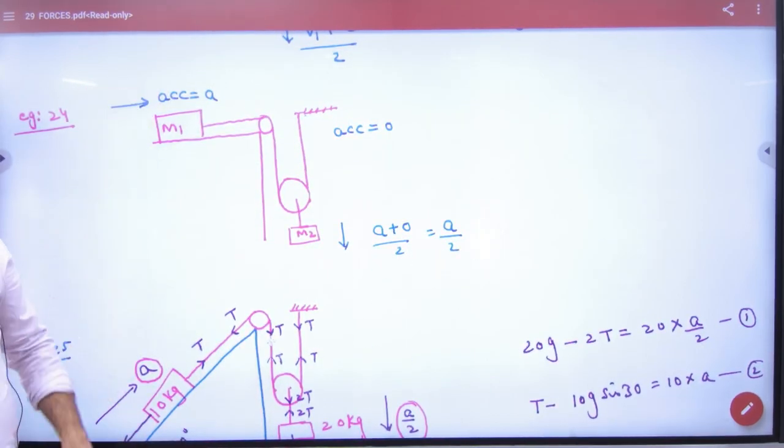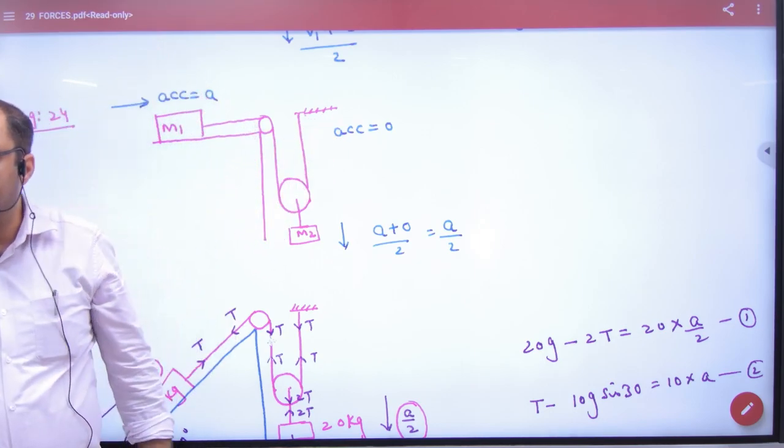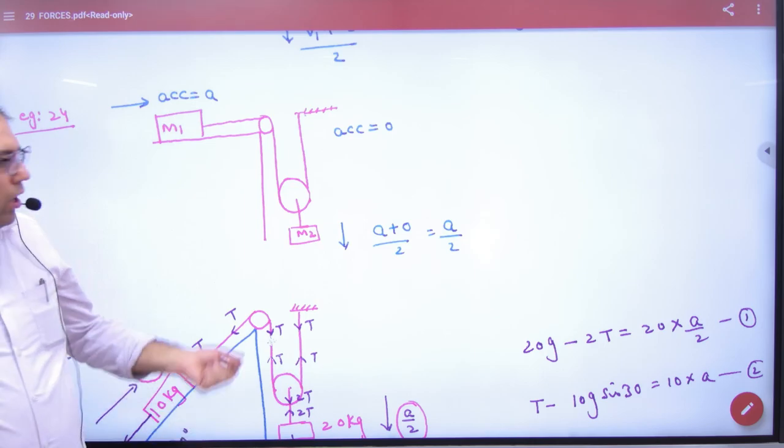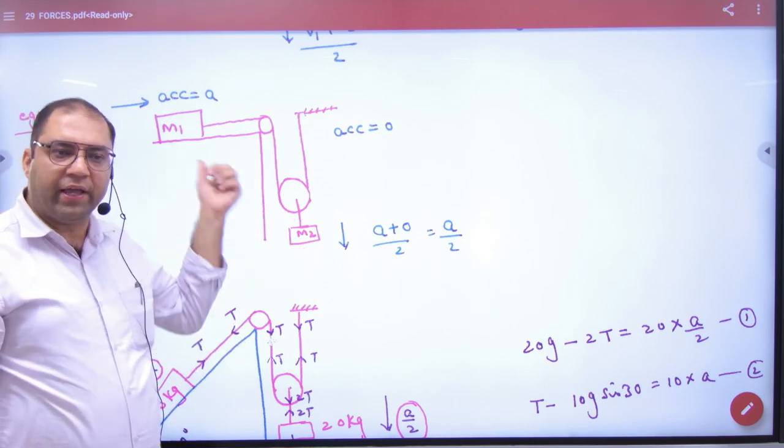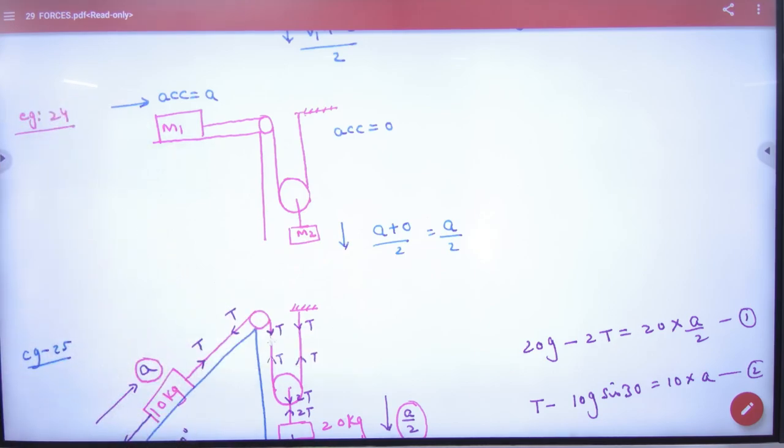If this acceleration is a, and there is no block here - you tied it to the ceiling with rope. Then here the acceleration will be zero. So now this will go down with what acceleration? a plus 0 by 2. Answer is a by 2. Got it? Point is clear? Okay, just forget this concept.